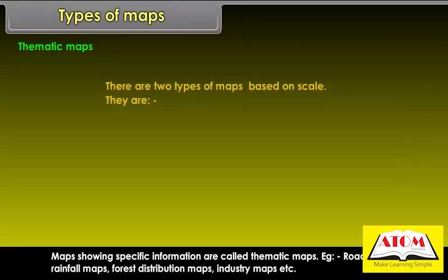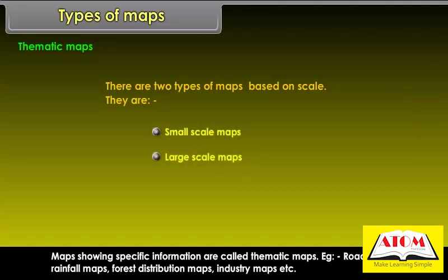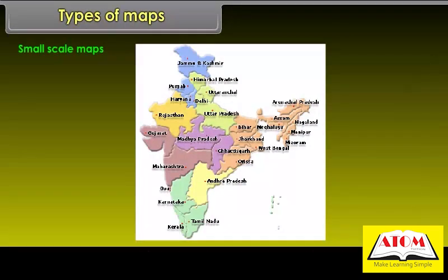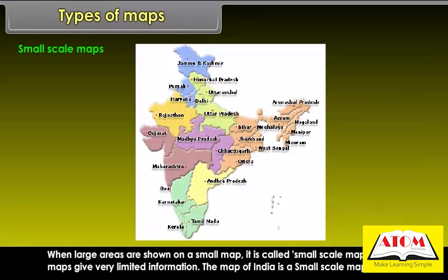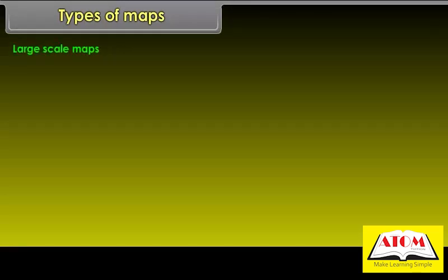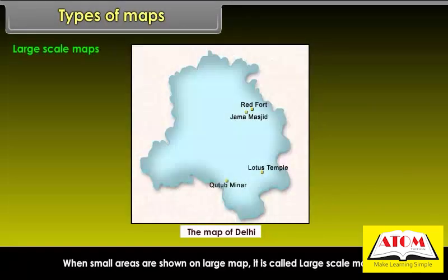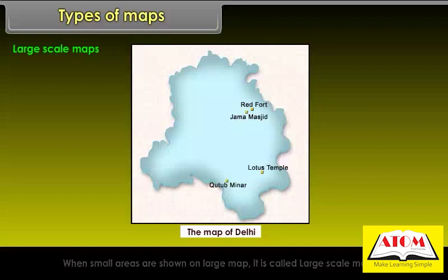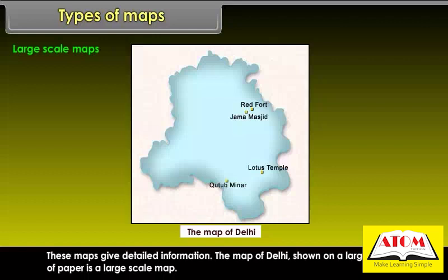There are two types of maps based on scale: Small Scale Maps and Large Scale Maps. Small Scale Maps: When large areas are shown on a small map, it is called a Small Scale Map. These maps give very limited information. The map of India is a small scale map. Large Scale Maps: When small areas are shown on a large map, it is called a Large Scale Map. These maps give detailed information.